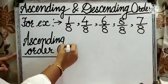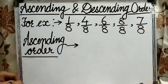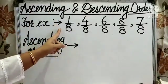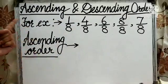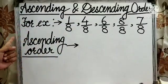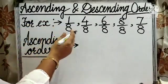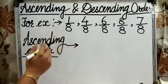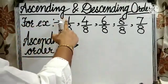Now the question arises, what is ascending order? When we arrange the numbers or the fractions from smallest to greatest, the order is known as ascending order. Here you can see that the denominators are same, so we have to identify with the values of numerators.